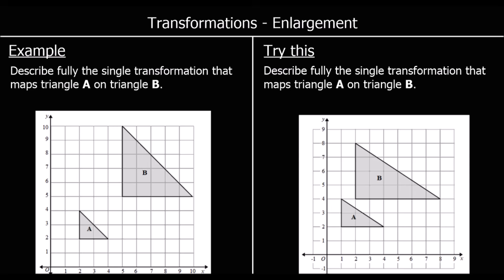When a shape gets bigger or smaller, we can call that transformation an enlargement. In the example here, we've got an enlargement and we need to describe fully the transformation that maps A onto B. So there are three bits of information we need to describe an enlargement. The first one is that it is an enlargement, so we write enlargement.